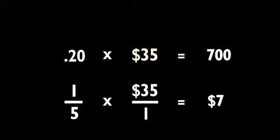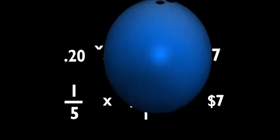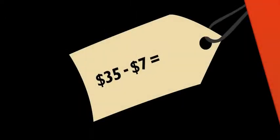Wait — seven hundred? Don't forget, you're multiplying by hundredths, so you need to move the decimal point two digits to the left. Right — seven dollars. So to get the sale price, we subtract seven dollars from the original price of the shirt?